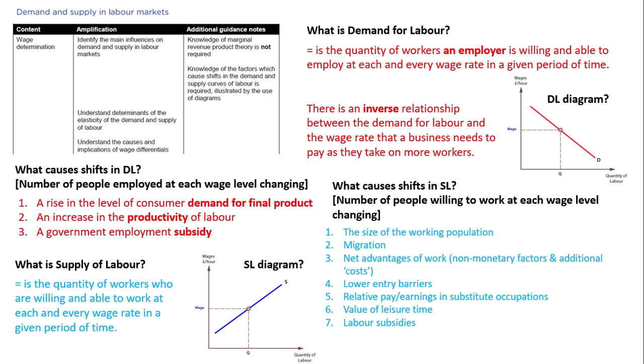Entry requirements also matter: if the grades and qualifications required to do a particular occupation increase or decrease, that will change the labour supply. Earnings in different occupations that people have transferable skills for will also have an impact. The value of leisure time is another factor. Finally, labour subsidies — for example, if workers are subsidised to join a particular occupation, such as teacher subsidies in the past — incentivise more people into that occupation and improve the supply of labour.